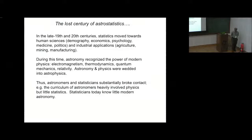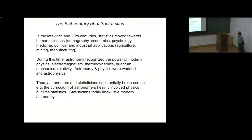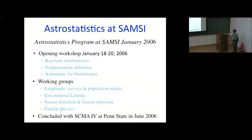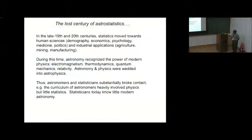In the last century, these two fields diverged quite a bit. Statisticians were pulled towards biostatistics because of applications in medicine and industrial settings. During the same period, astronomers recognized the power of modern physics — electromagnetism, thermodynamics, and so on — and they became astrophysicists. So these two fields diverged quite a bit, until the middle of the last century when people started thinking again about using statistics in astronomy.